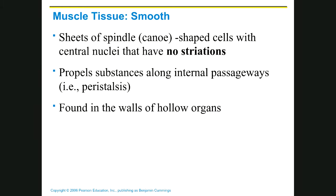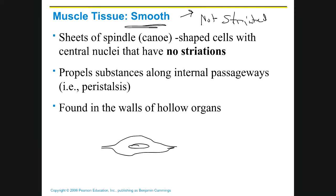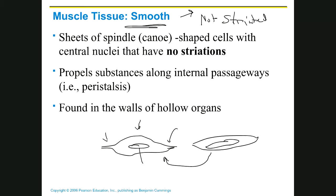Let's look at smooth muscle. Smooth muscle is called that because it's not striped — it's not striated. It's smooth looking; it doesn't have stripes. The cells are shaped differently — a little bit like canoes or a kayak. A kayak has tapered ends, and it's thick in the middle, and that's where the nucleus is. There are no striations.